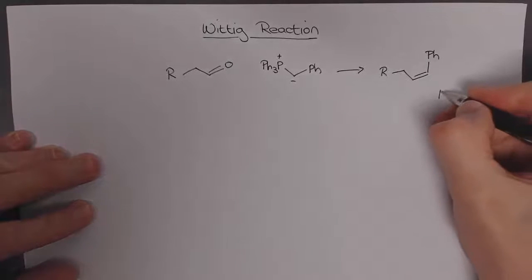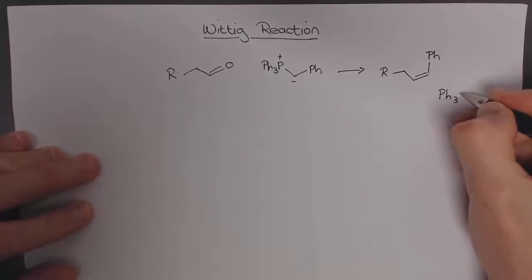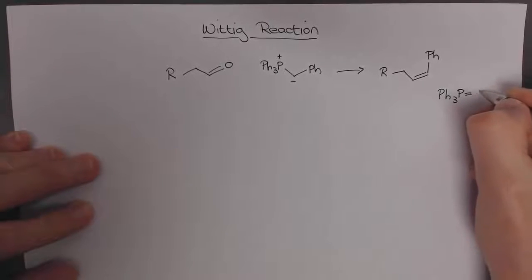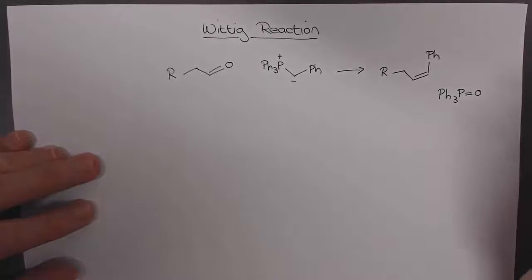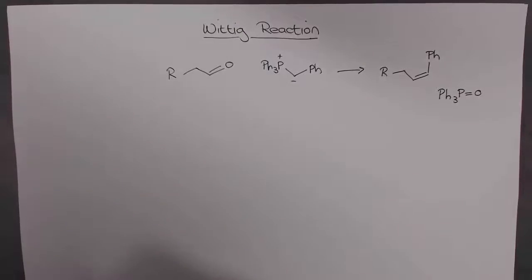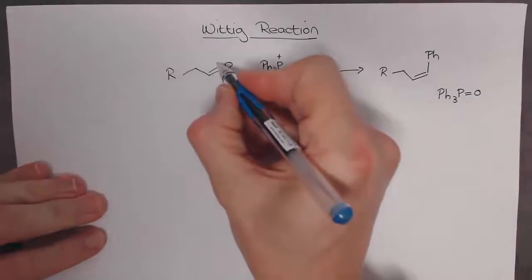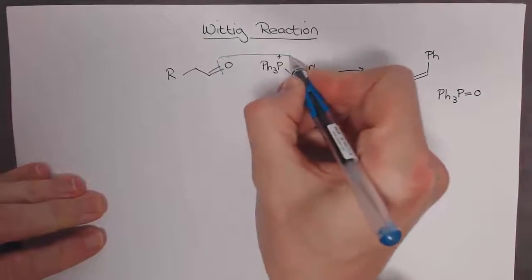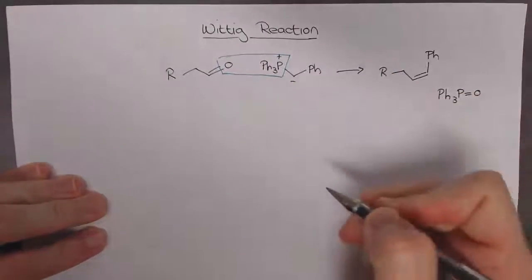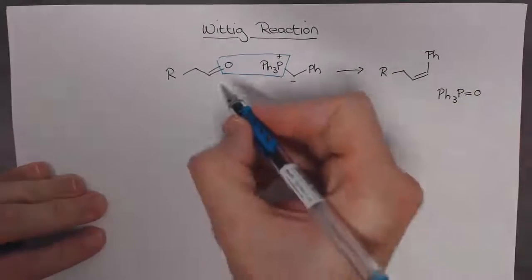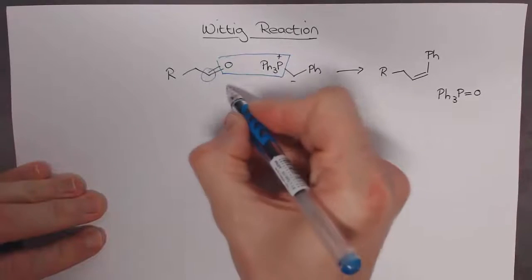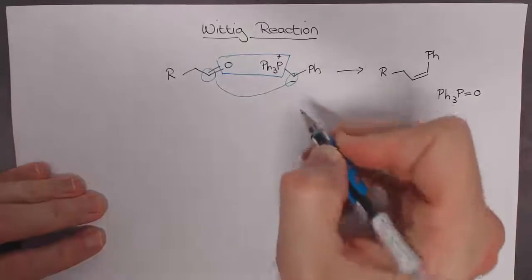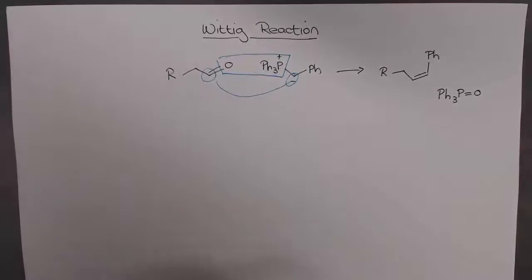We also get as a byproduct triphenylphosphine oxide. Essentially if you look at this reaction, the oxygen and the triphenylphosphine have combined with each other, and this carbon has combined with this carbon of the Wittig reagent over there.